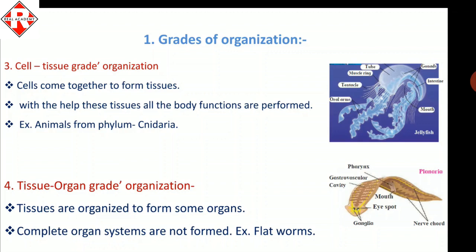The fourth type is tissue-organ grade organization. In multicellular organisms, tissues are organized to form organs, but there is no complete organ system. You can find organs such as mouth, pharynx, and gastrovascular cavity. Planaria is an example, as seen in the slide.